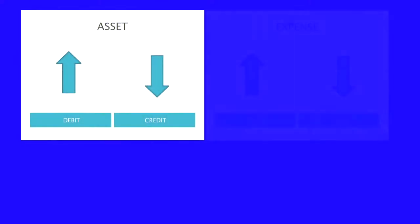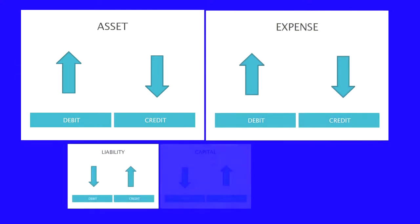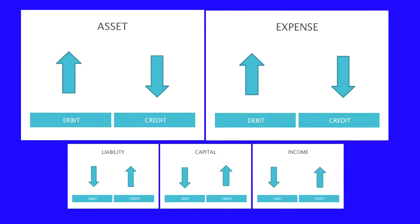Then the next procedure is to apply the rules of debit and credit. Asset accounts and expense accounts will be credited if there is a decrease. Liability, capital, and revenue are debited if there is a decrease. Liability, capital, and revenue accounts are credited if there is an increase. In the above example, when goods are purchased, expenses are increasing, so purchases account will be debited. When payment is made in cash, assets decrease, so cash account is credited. Now the journal entry will be recorded in the journal.